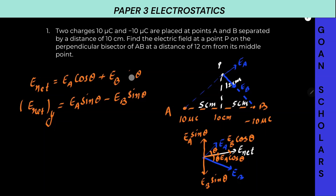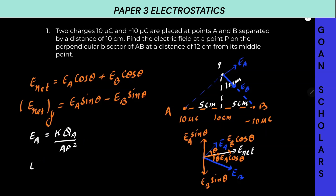Let me make a correction: it is EA cosθ plus EB cosθ along the X axis, and EA sinθ minus EB sinθ along the Y axis. So first of all, let's figure out what EA is. EA — the electric field due to the charge at A — will be K times QA divided by AP squared, which is 9×10⁹. And electric field due to B will be K times QB divided by BP squared.